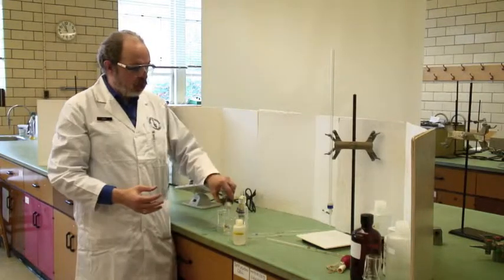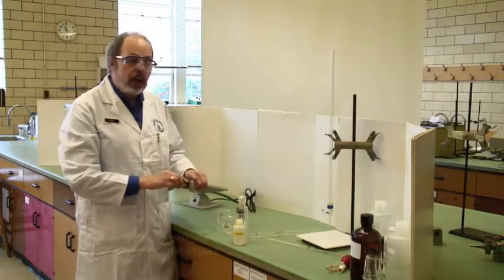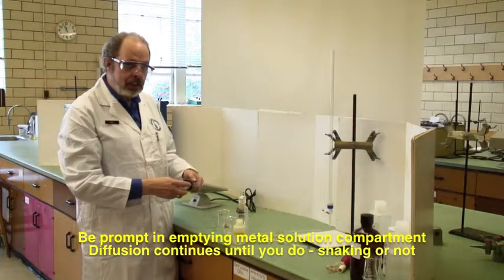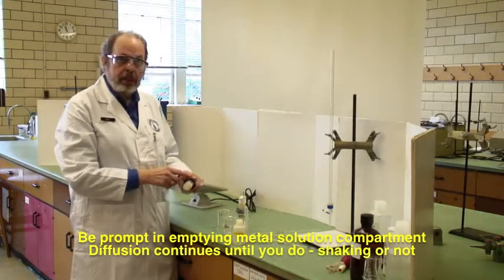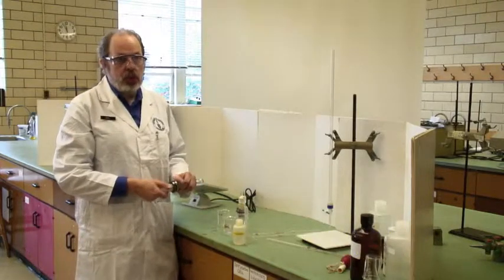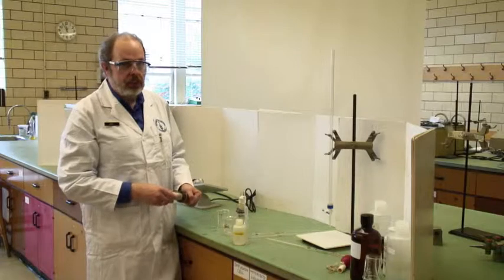And pour the contents of the metal cell, which will have some acid into it, as soon as you can. Because even though it's not on the agitation device, diffusion is still happening. So you need to stop that process as close to the time of five minutes or seven minutes, or whatever it is, as you can.